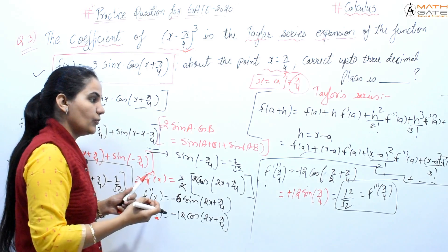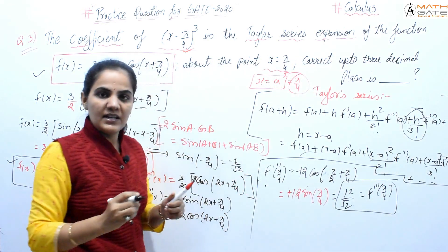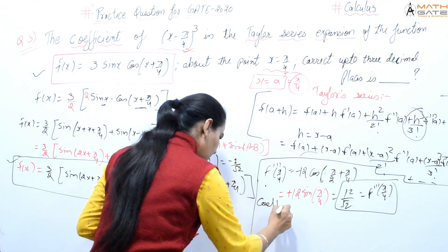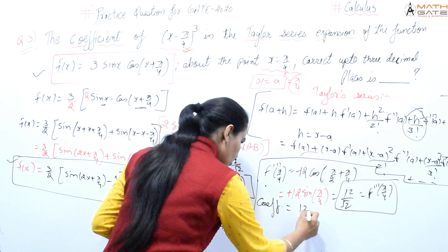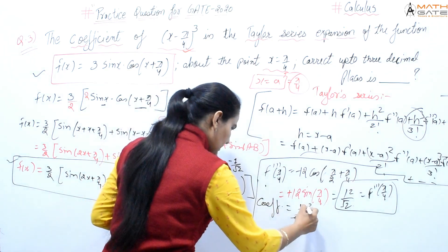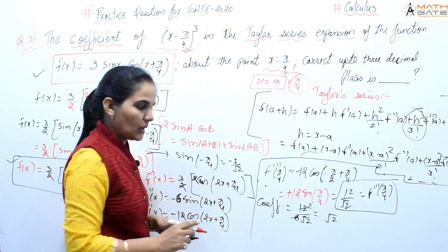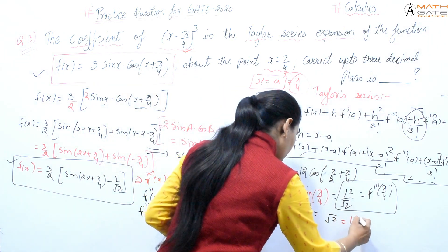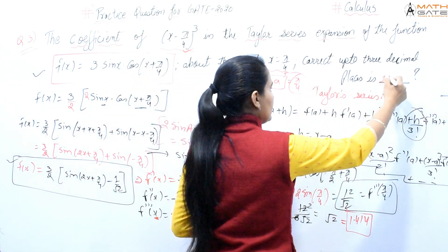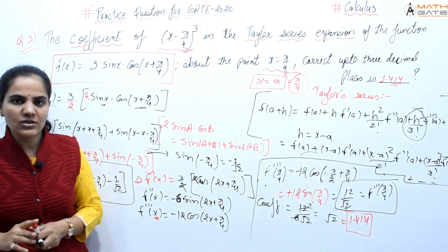When we talk about the coefficient, the series expansion has factorial 3 dividing it. So the coefficient = 12/(√2 × 3!) = 12/(√2 × 6) = 2/√2 = √2 ≈ 1.414 up to 3 decimal places.